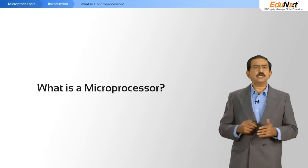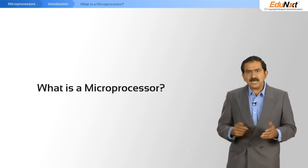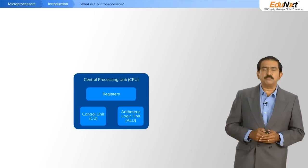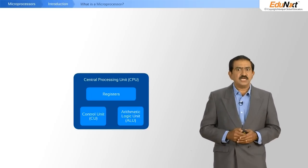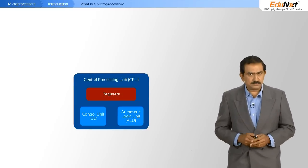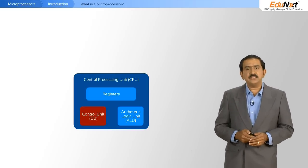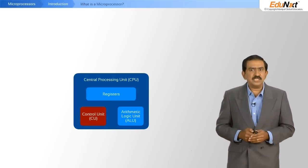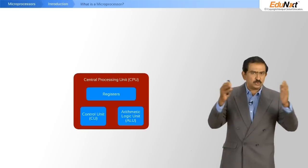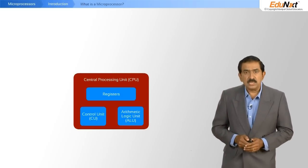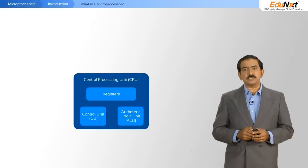So what is a microprocessor? The heart of the microprocessor is called the central processing unit. And the central processing unit consists of a set of registers, the control unit, and the arithmetic logic unit. All of this together is called the CPU.